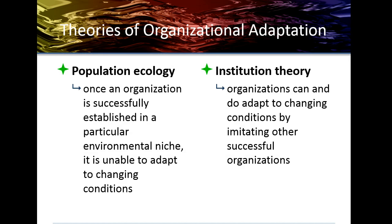There are a couple of theories related to organizational adoption. One is population theory, where we look at the successfulness of establishing a particular environmental niche. And then there is institutional theory, which looks at the way organizations can adopt the changing conditions imitated by other successful organizations.